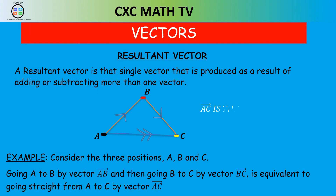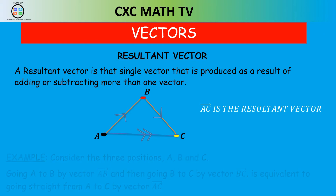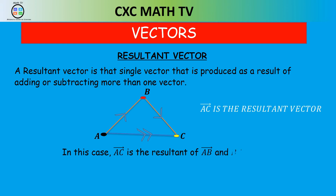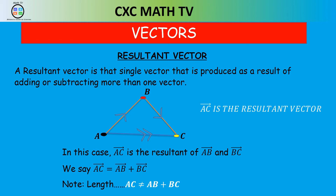So in this case we say AC is the resultant vector of AB and BC. In other words, going from A to C equals going from A to B plus going from B to C. Now it's important to note that the length of AC is not equal to the length of AB plus the length of BC. If we take off the arrow the statement is not true, but with the arrow — indicating direction — that statement will be true.